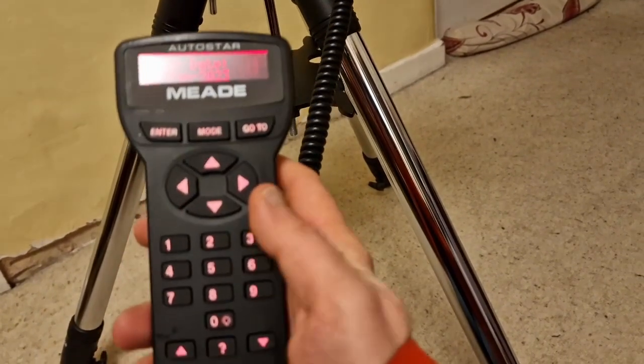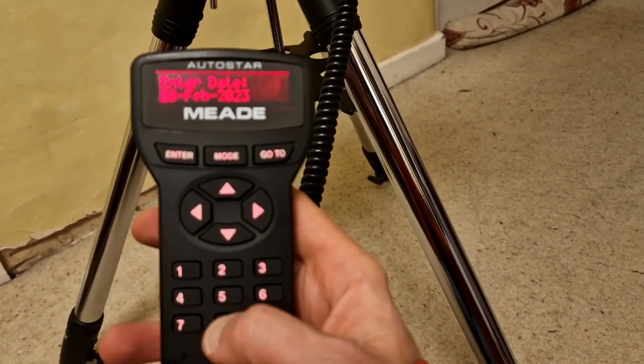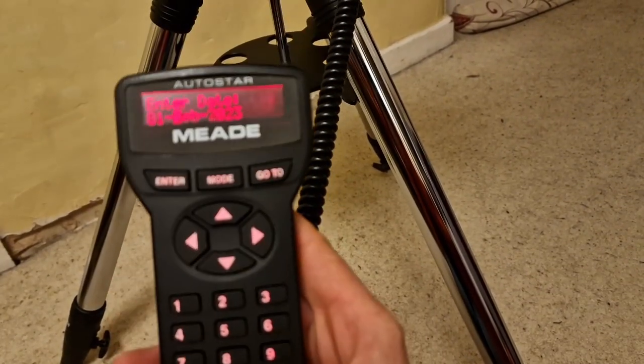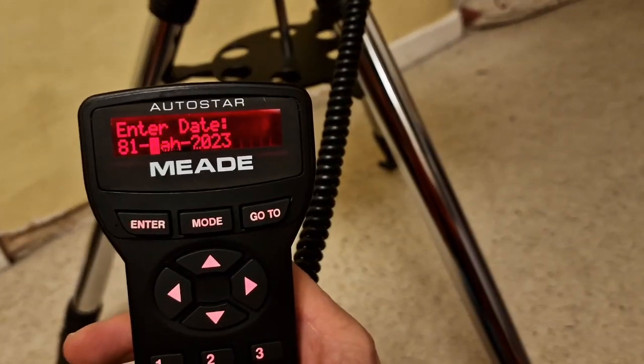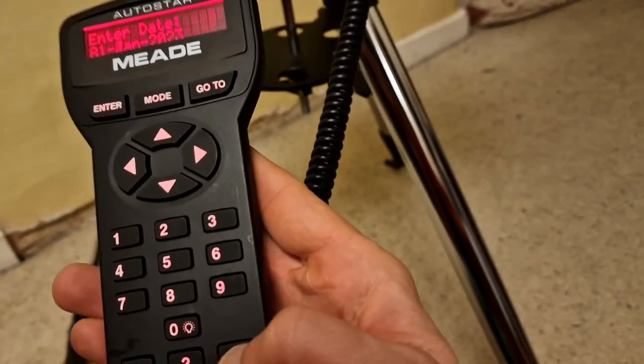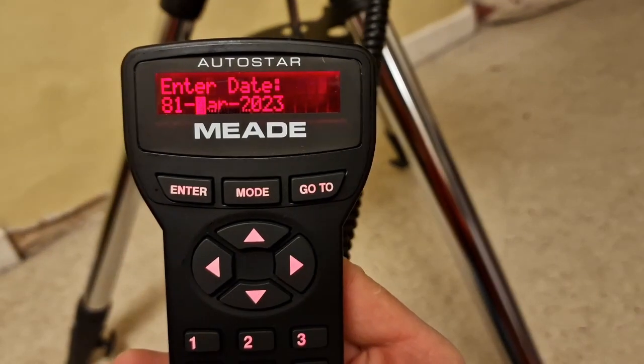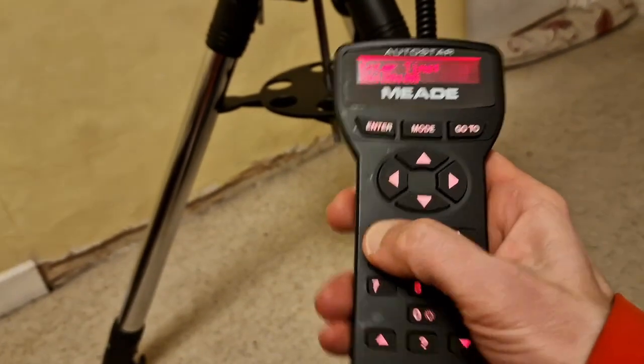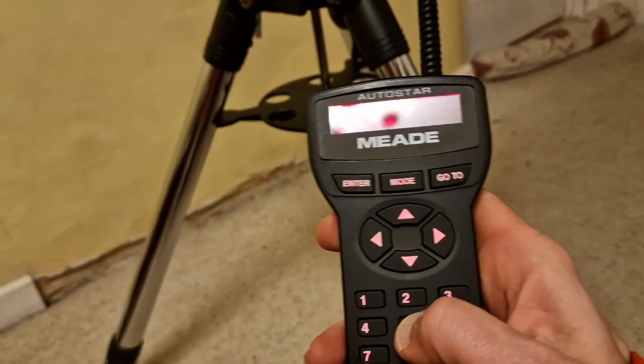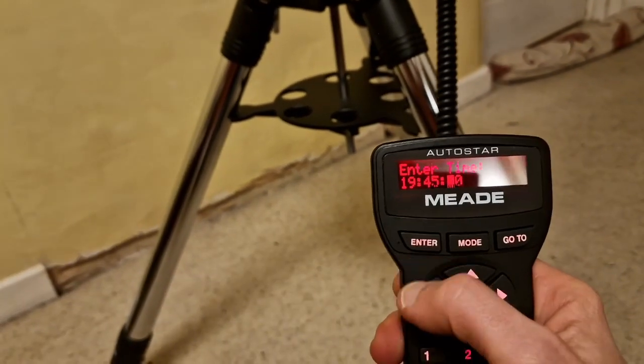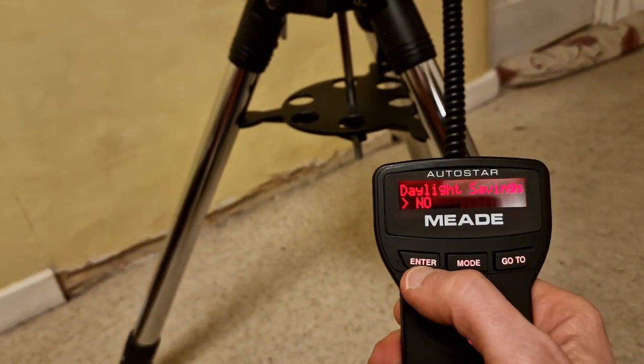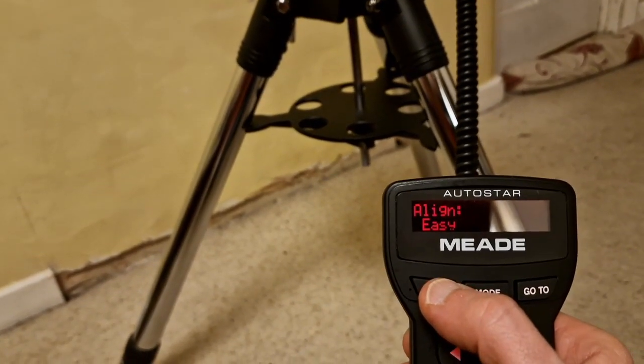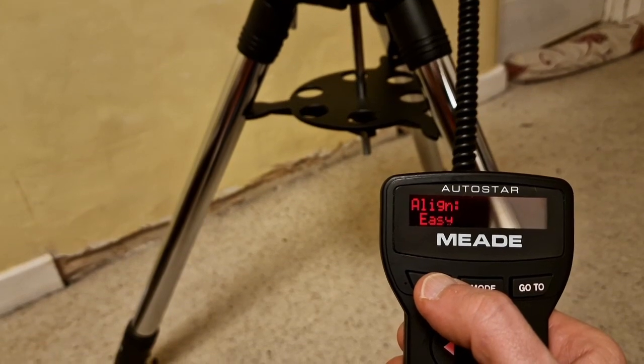It comes up with a day, so it's the first of March today. I'm going to do zero one, which is the up and down button to change that. Change it to January, so on the down button twice—March. It asks me the time: 19:45. Enter. Daylight saving currently no, but in a few weeks it will. And it's asking me if I want to do an easy align, which is going to pick two stars for me to align against.